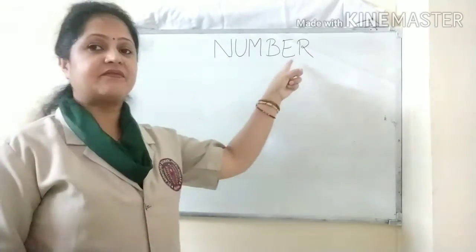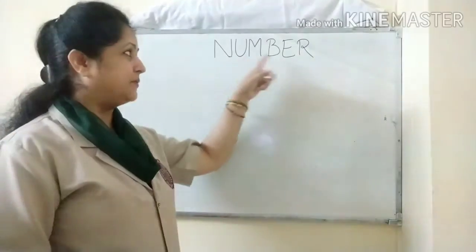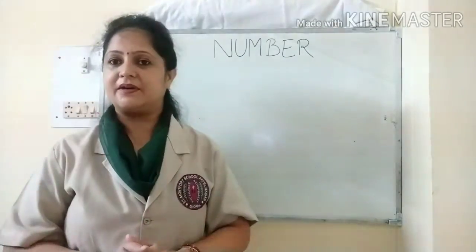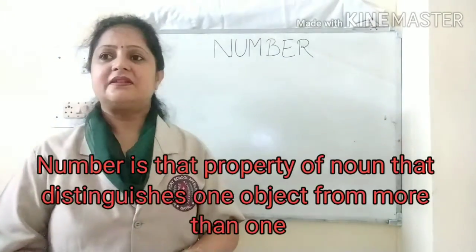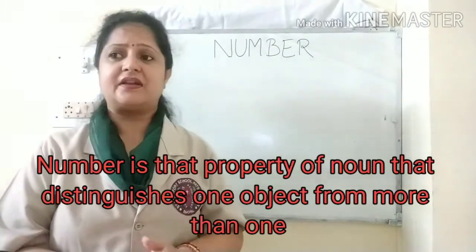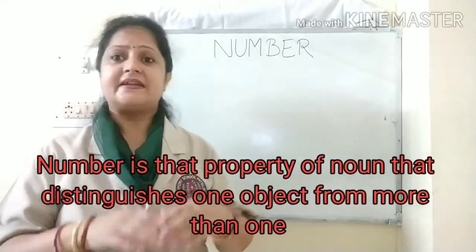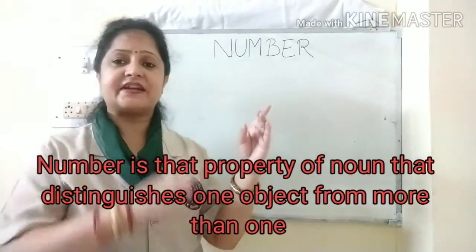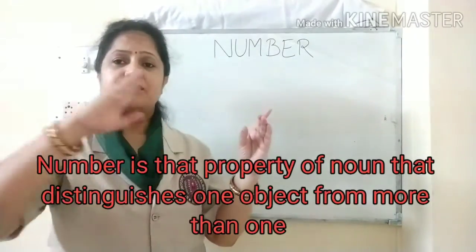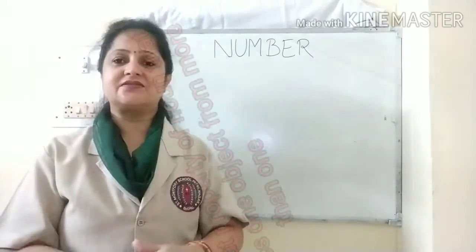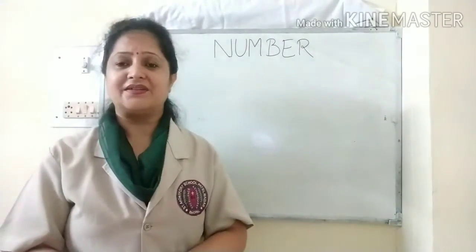This is our fifth chapter of grammar: Number. So what is Number? Number is that property of a noun that distinguishes one object from more than one. This is called Number.